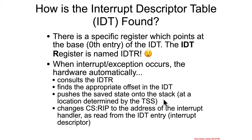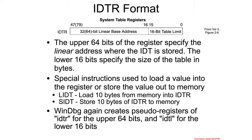Then it's going to push the saved stack information onto the stack using the TSS — using the stack address specified by the TSS. And then from within the particular entry in the IDT, it's going to pull out a CS and RIP that are going to be used as the new executable state. So IDTR looks exactly like the GDTR in that it has a 64-bit portion that says here's the base of the table, and a 16-bit portion that says here is the limit or the size of the table.